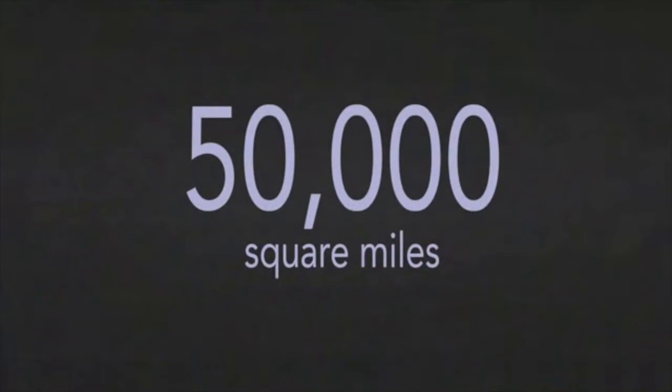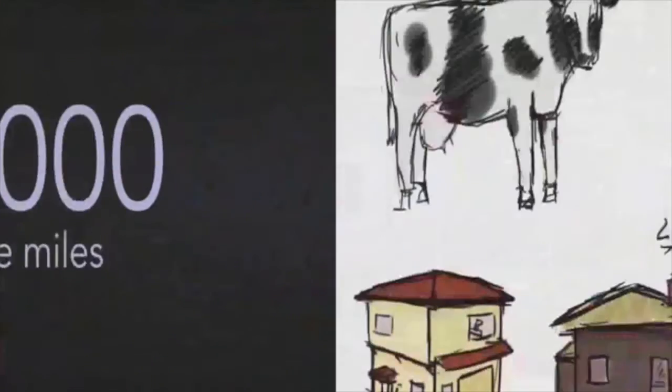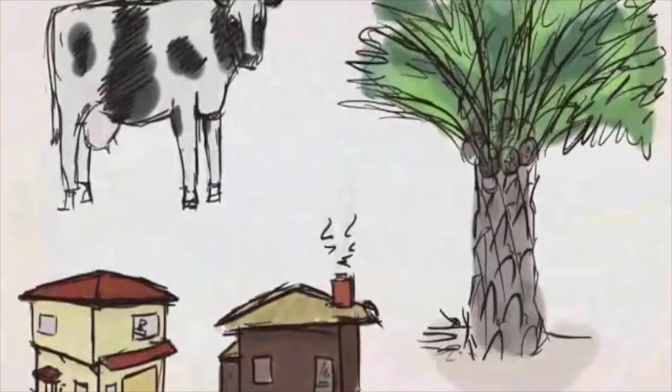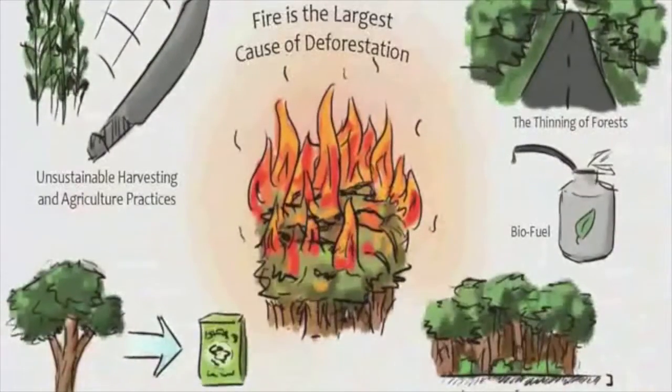Every year, about 50,000 square miles of forests are destroyed. As the human population expands, more and more forest is converted into housing, palm oil plantations, and cattle grazing expanses.